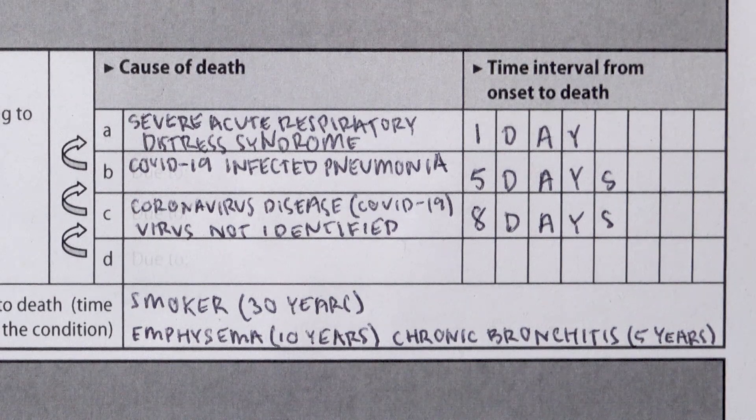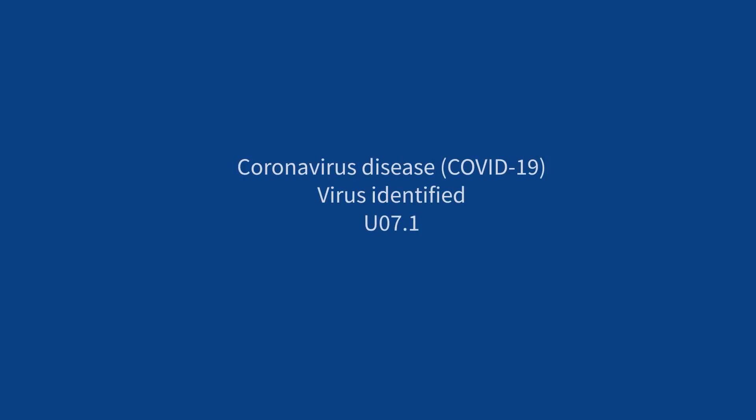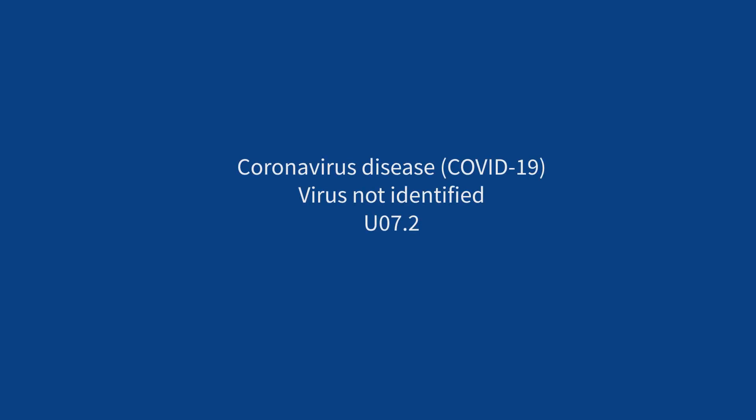The underlying cause of death can now be correctly coded as U07.2 COVID-19. Remember: when a COVID-19 death was laboratory tested and confirmed, it must be detailed as coronavirus disease (COVID-19), virus identified, and coded as U07.1. When a COVID-19 patient was not tested or the results were inconclusive, but a clinical or epidemiological diagnosis is available, it must be detailed as coronavirus disease (COVID-19), virus not identified, and coded as U07.2.